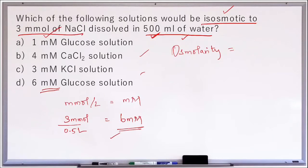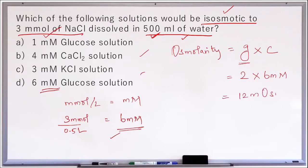Now we convert to osmolarity. The formula is: number of particles the substance gives in solution (G) multiplied by its concentration in millimoles. For sodium chloride, G is 2, because sodium chloride dissociates into 2 particles. The concentration is 6 millimoles, so this gives 12 milliosmoles — the osmolarity or osmotic strength of the given solution. We now need to identify which other solutions also have 12 milliosmoles strength.